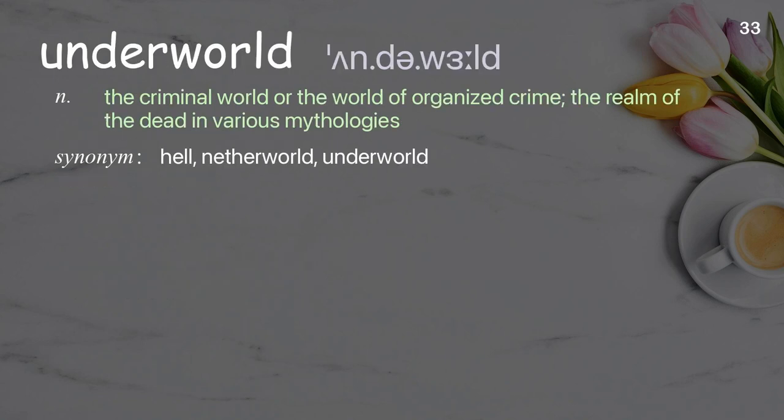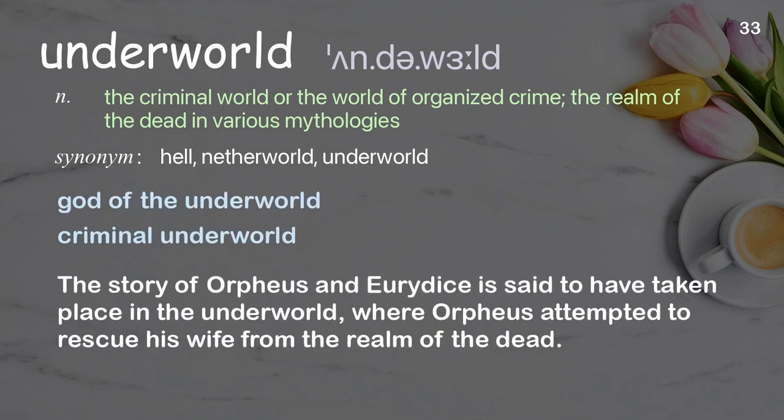Underworld: The criminal world or the world of organized crime; the realm of the dead in various mythologies. Examples: God of the underworld. Criminal underworld. The story of Orpheus and Eurydice is said to have taken place in the underworld, where Orpheus attempted to rescue his wife from the realm of the dead.